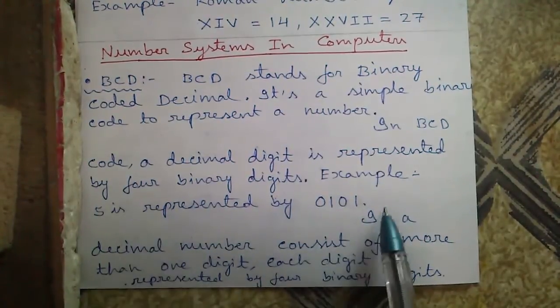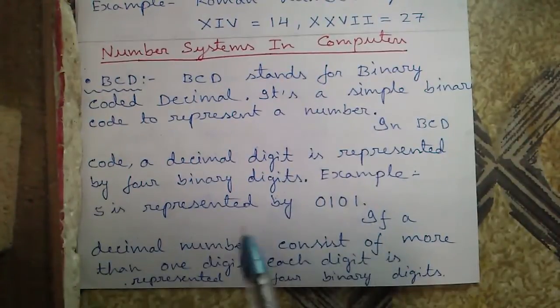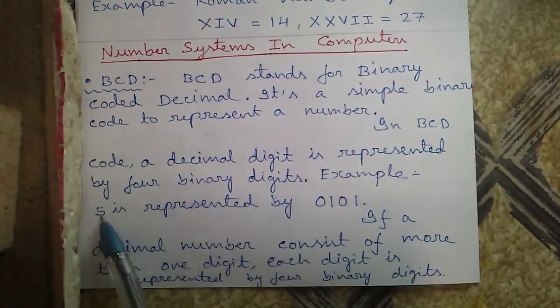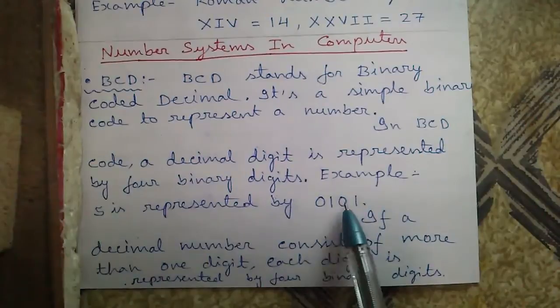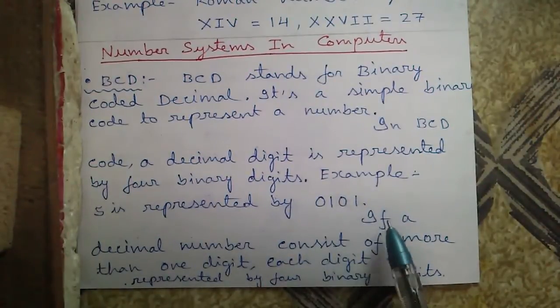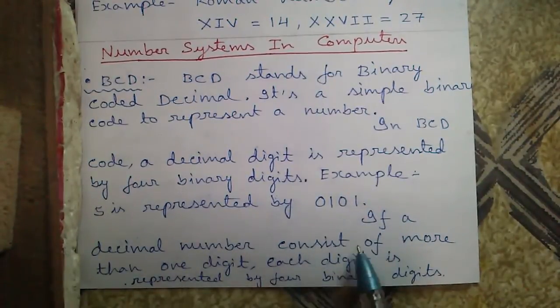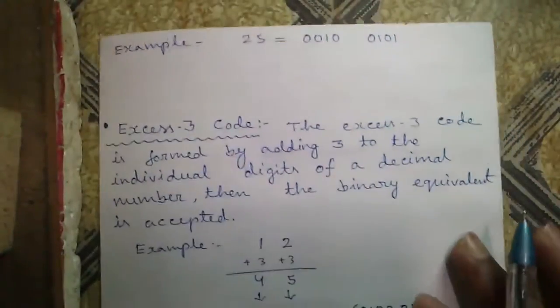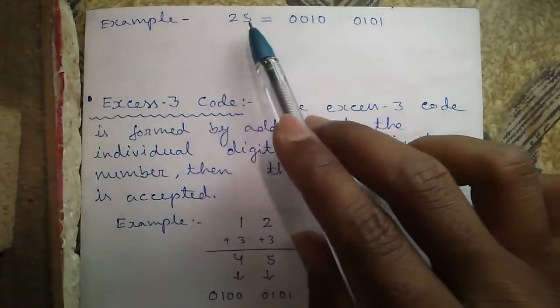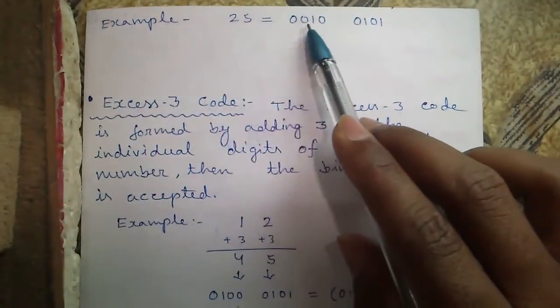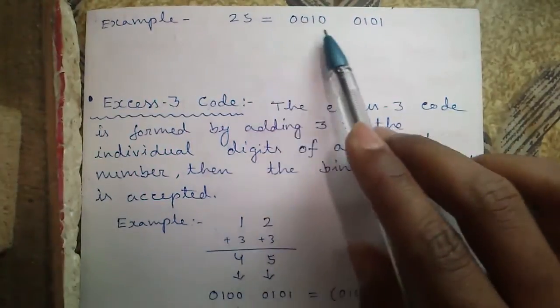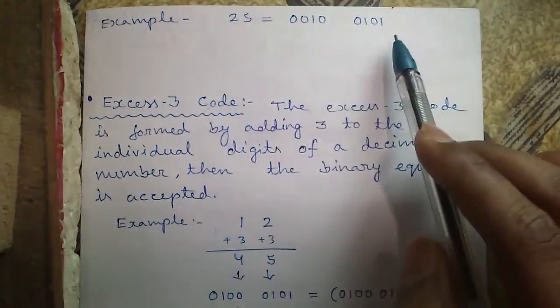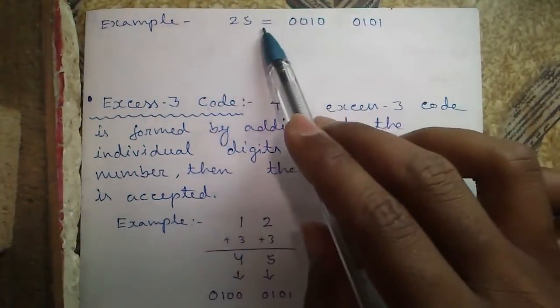In my next video, I will tell you about how to convert from decimal to binary and vice versa. So for now, know that 5 is represented at 0101 in binary. If a decimal number consists of more than one digit, each digit is represented by 4 binary digits. For example, 25 has 2 digits. So it will be represented by 2 as 0010 and 5 as 0101. So together, it forms the BCD equivalent of 25.